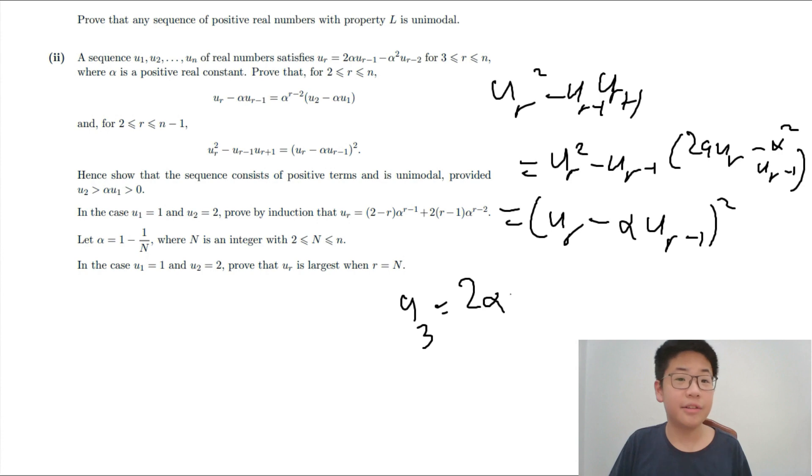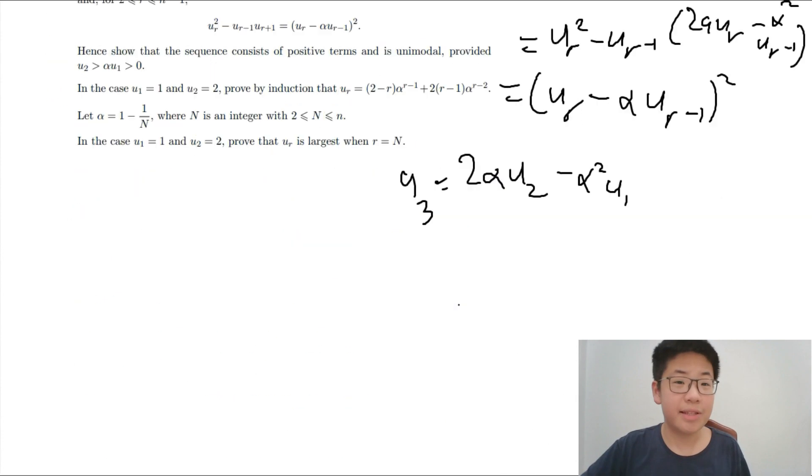2 alpha U2 minus alpha squared U1. So, this means if we have U2 squared is greater than alpha U1, it's greater than 2 alpha squared U1 minus alpha squared U1 equals to alpha squared U1, which is actually greater than U2 if we had just proven. And then, we are done.